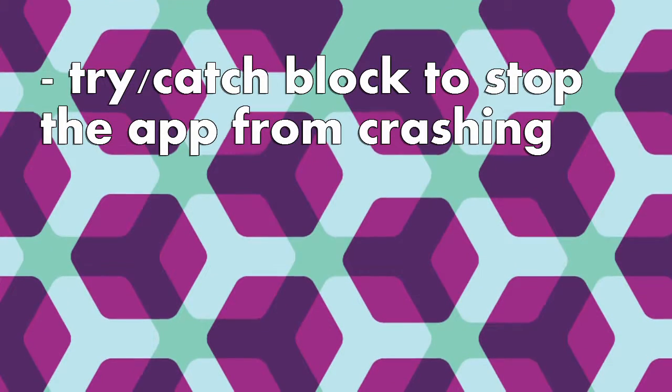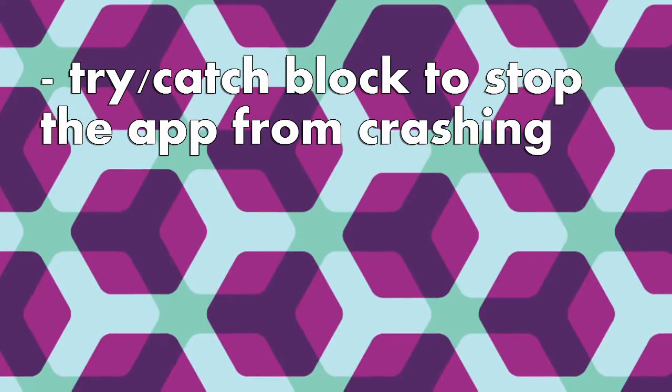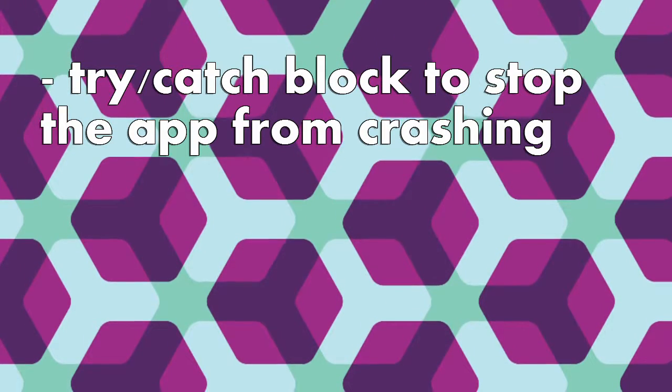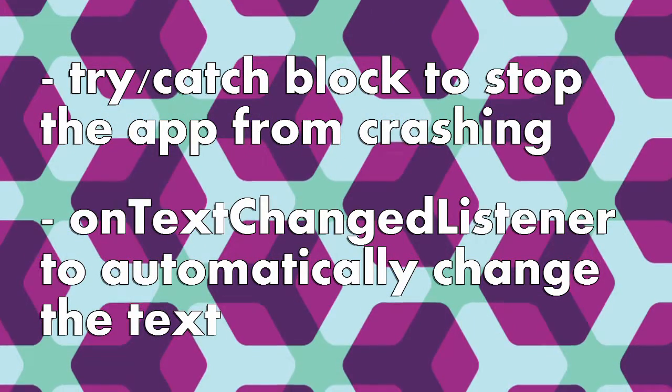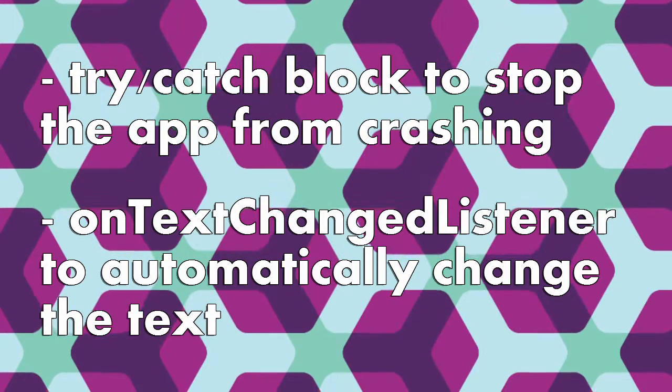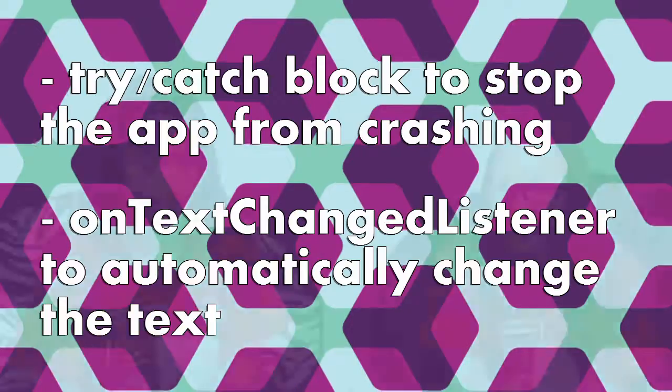There are definitely a couple of other changes we could make. For instance, you'll probably want to add a try-catch block to stop the app from crashing when the edit text is empty and the user clicks a radio button. Another thing we could do is use an OnTextChangeListener to automatically change the result as soon as the user modifies the edit text object. Try your hands with these challenges. When you're ready, take a look at our finished Java file to see how you did.